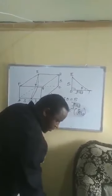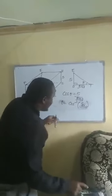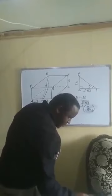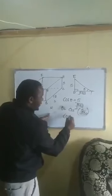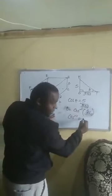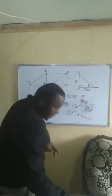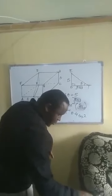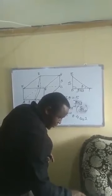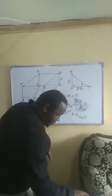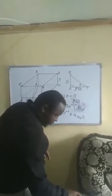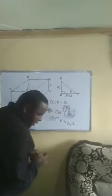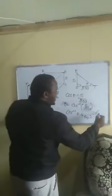We calculate 5 divided by √153, which gives approximately 0.4042. Taking the inverse cosine of 0.4042 gives us 66.17 degrees.